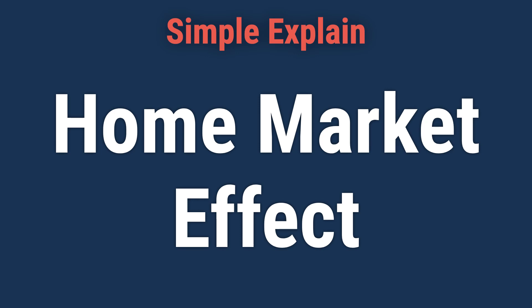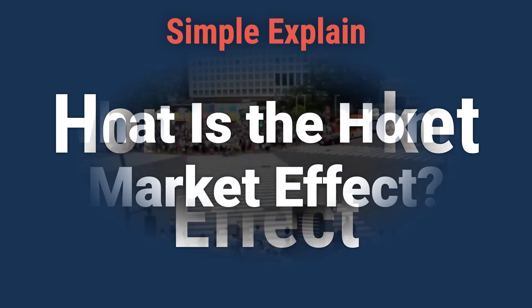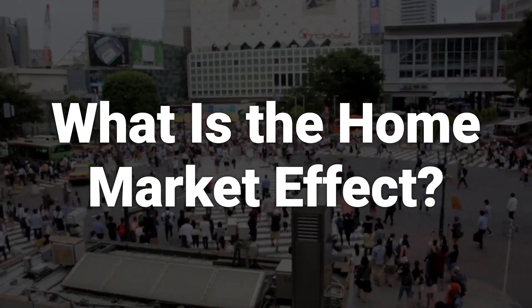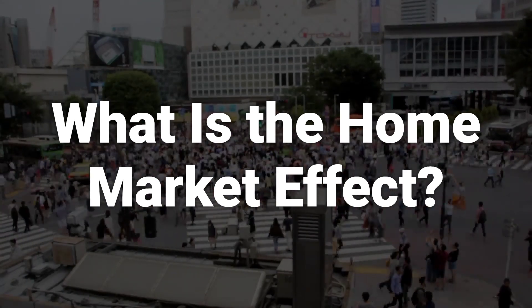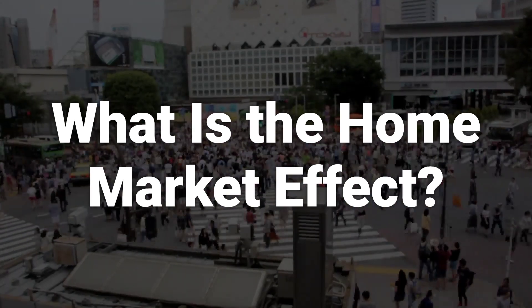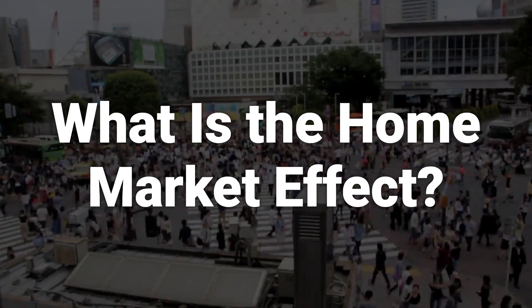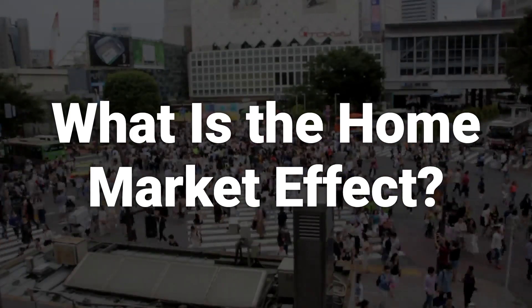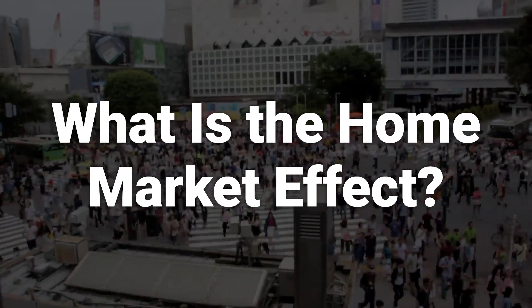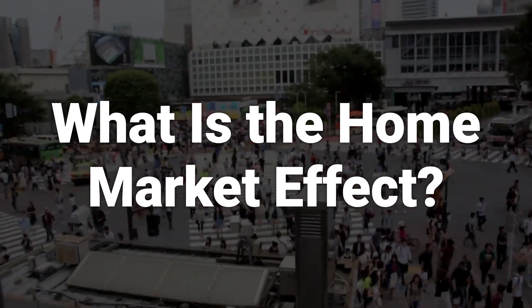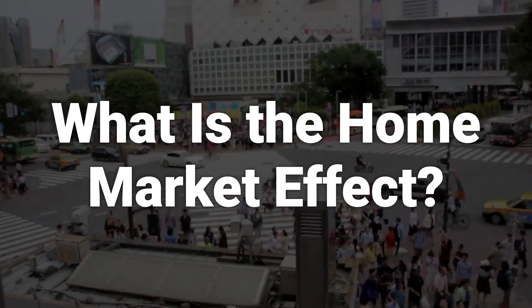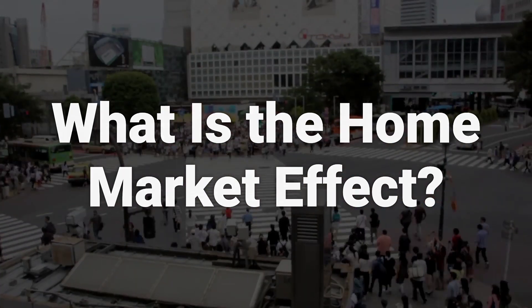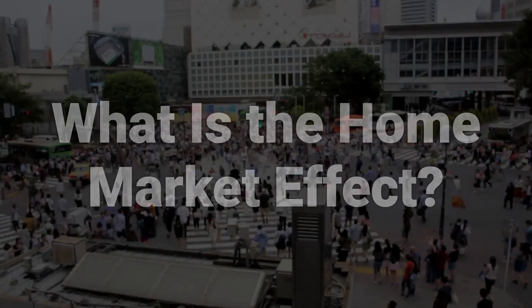Today, we will talk about the home market effect. The home market effect was originally hypothesized by Stauffen Linder in 1961 and formalized by Paul Krugman in 1980. The central tenet of the hypothesis is that countries with larger sales of some products at home will tend to have larger sales of those same products abroad.